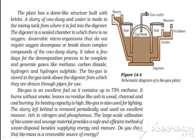Biogas is an excellent fuel. It contains up to 75% methane. It burns without smoke, leaves no residue like ash from wood, charcoal and coal burning, and its heating capacity is high. Biogas is also used for lighting. The slurry left behind is removed periodically and is used as excellent manure, collected from the outlet chamber. The large scale utilization of bio-waste and sewage material provides a safe and efficient method of waste disposal besides supplying energy and manure.